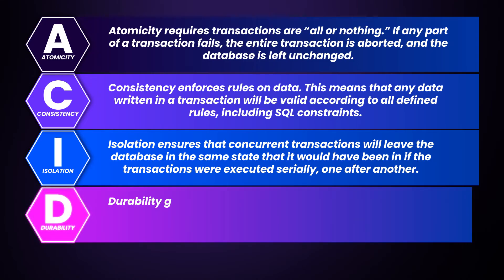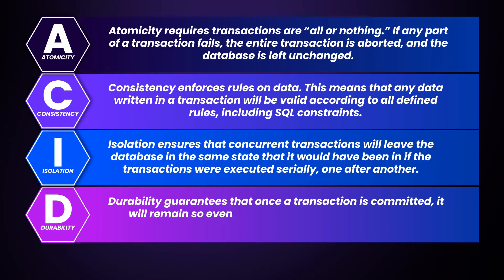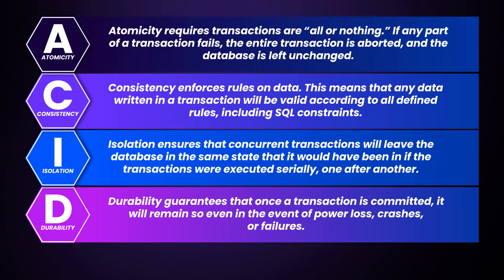Durability guarantees that once a transaction is committed, it will remain committed. In CockroachDB, this means that every acknowledged write has been persisted consistently on a majority of replicas through the Raft consensus algorithm. Acknowledged writes will never be rolled back, even in the case of node failure.